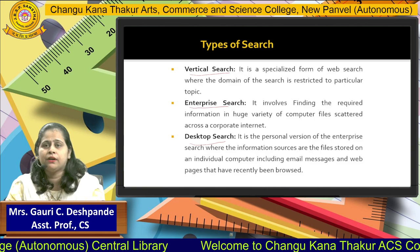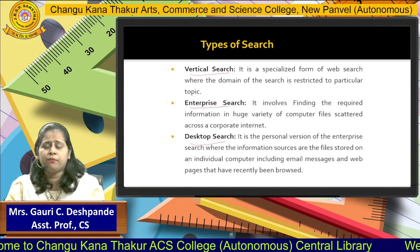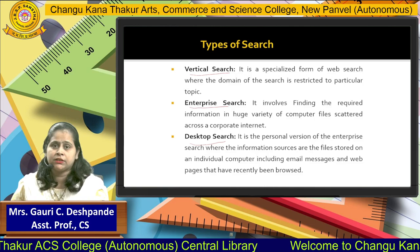The third one is desktop search. Desktop search refers to your normal PC or desktop PC. From that, if you want to find out data from the C drive, D drive, any drive, any folder or files, then that kind of search is nothing but desktop search.